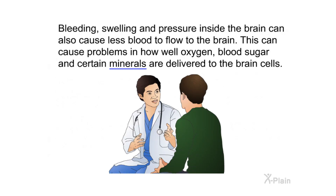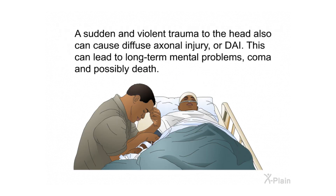Bleeding, swelling, and pressure inside the brain can also cause less blood to flow to the brain, creating problems in how well oxygen, blood sugar, and certain minerals are delivered to the brain cells. A sudden and violent trauma to the head can also cause diffuse axonal injury, or DAI, which can lead to long-term mental problems, coma, and possibly death.